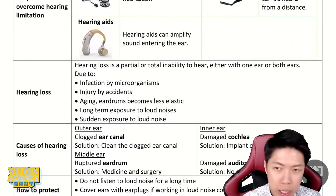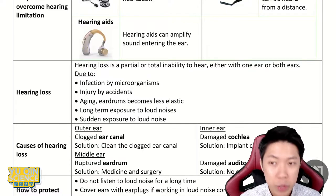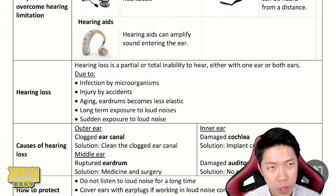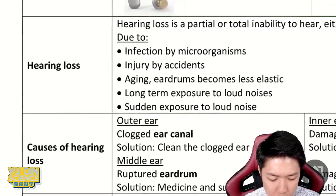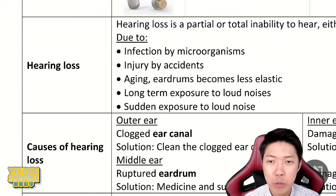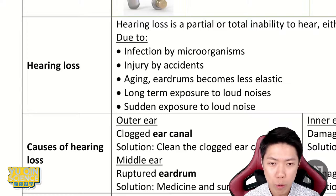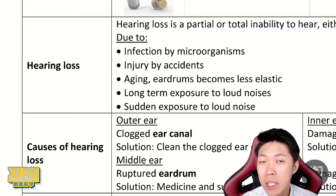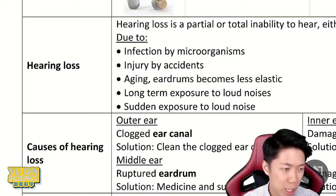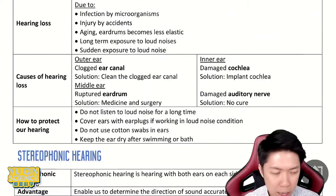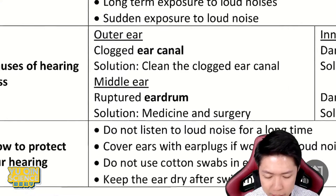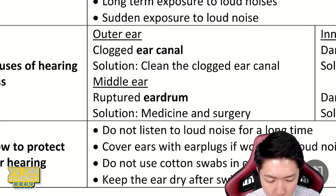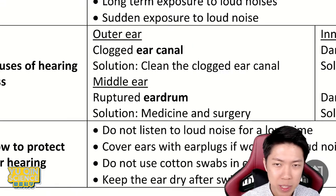We could get hearing loss for different kinds of reasons. Hearing loss basically means partial or total inability to hear, with either one ear or even both ears. It could be due to infection, injury from an accident, aging, long-term exposure to noise — if you like to listen to loud music or stay near a construction site — or sudden exposure to loud noise like an explosion. Those could cause hearing loss.